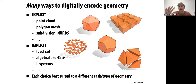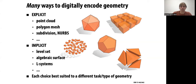We have two main types of representations: explicit and implicit. For explicit, we have, for example, point clouds, polygon meshes, subdivision surfaces, NURBS, Bézier curves, and so on. Explicit means we can access the points on the surface directly. Implicit means the surface is defined by an equation or function that specifies a constraint the points need to satisfy. For implicit, we have choices like level sets, algebraic surfaces, blobs, and so on. Each choice is best suited depending on the task.